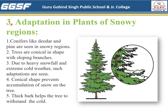The third type is adaptations in plants of snowy regions. Conifers like cedar and pine are seen in snowy regions. In snowy regions there is heavy snowfall and extreme cold weather, so the shape of the trees is conical and their branches are sloping. The conical shape prevents accumulation of snow on the tree, and the thick bark of the tree helps to withstand the cold.